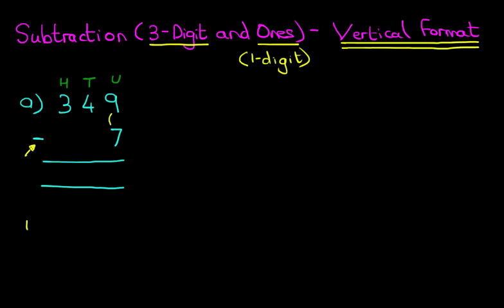Let's show our workings below. The units column: we have 9 minus 7. What is 9 minus 7? The answer is 2, so we write that down. Now the tens column: it's 4 minus 0 — there's nothing there — so 4 minus 0 is 4. The hundreds column: 3 minus 0, the answer is 3. And we have our answer: 349 minus 7 equals 342.